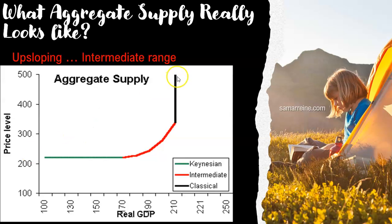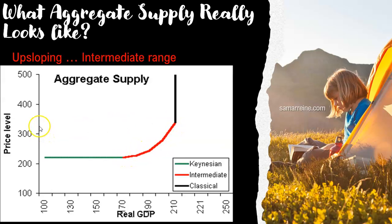The classical economists say the aggregate supply curve is vertical because they assume wages have absolutely no restrictions on them, the price level can change at will, and wages can be adjusted according to the price level without hurting productivity — so total production remains the same. But then you have the intermediate range, which is upsloping, showing a clear connection between the price level and real GDP or total production.